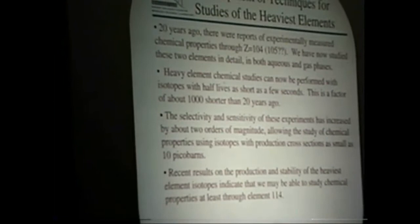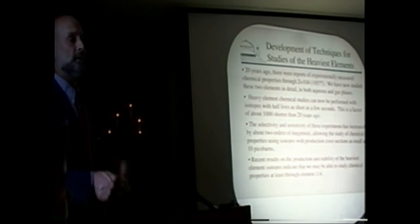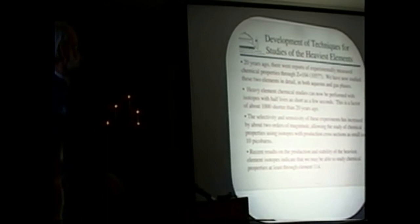We're to the point now where we can perform the chemical studies with isotopes that have half-lives as short as a few seconds, and this is about a factor of a thousand shorter than the manual chemistry we were doing 20 years ago. The selectivity and sensitivity of the experiments has increased in many ways. We're able to do experiments with cross-sections as small as 10 picobarns. This is production rates of just about an atom per day. Detection rates of about an atom per week.